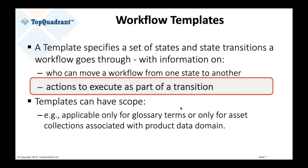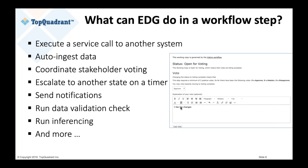What actions can be executed as part of a transition is another important point. A variety of different actions could happen — for example, voting can be coordinated, notifications can be sent out, there could be service calls to other systems, ingestion of data, or validation of data. The one built-in action has to do with committing a workflow: when the workflow is committed, the changes get written out to the production copy as part of the committed step.